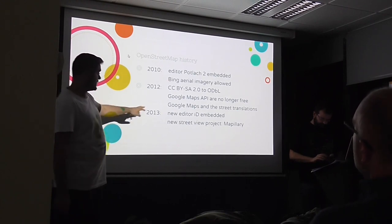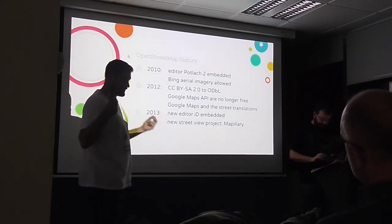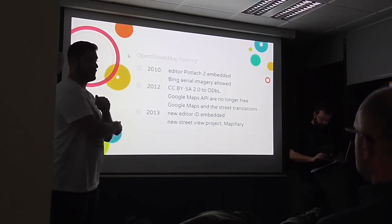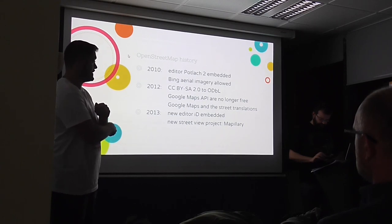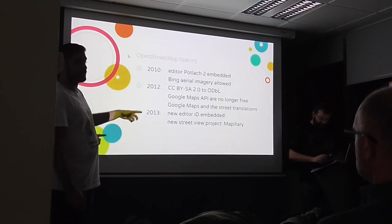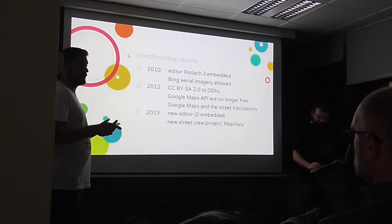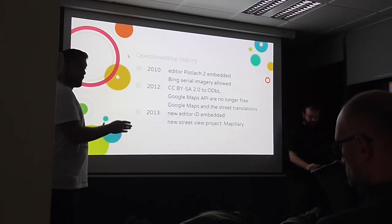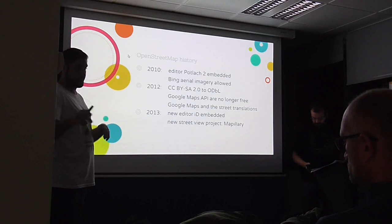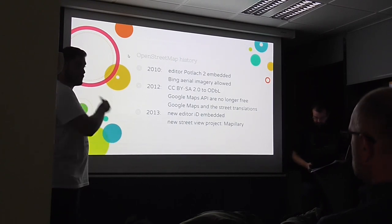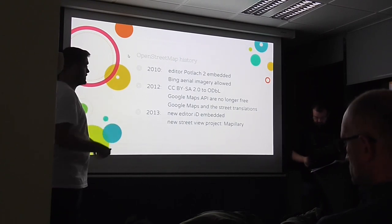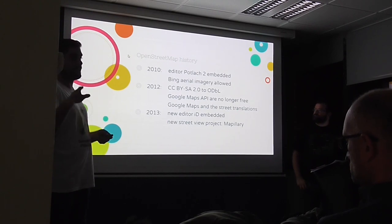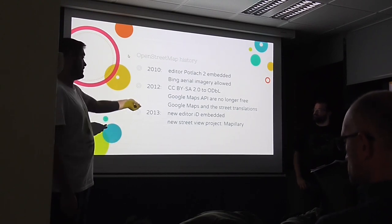Also in 2013, we encountered another connected project: Mapillary. It's a crowdsourced, crowd-funded Street View project that competes directly with Google Street View. OpenStreetMap has maps and geodata but no Street View or routing. So Mapillary is our support to compete with Google Maps in that area.